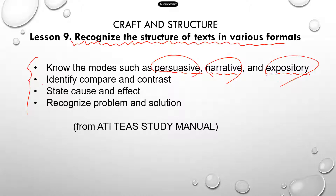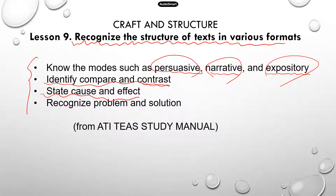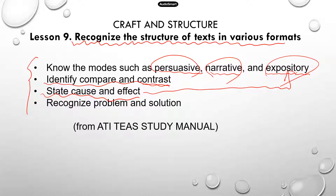Second, you need to identify compare and contrast. Compare is to find the similarities and contrast is to find the differences. You need to be able to state and find the cause and effect relationship. This is usually in the mode of expository — when the author is trying to explain something, it can be a cause and effect event. For example, smoking causes a lot of diseases. The cause is smoking and the effect is lung disease.